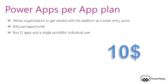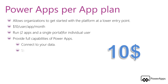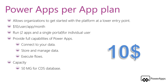The PowerApps Per App Plan provides full capabilities of PowerApps, such as connecting to your data using standard connectors, premium connectors, on-premises data gateway, and custom connectors. You can store and manage data utilizing Common Data Service, create and access custom entities including complex entities, and you will have read-only access to Dynamics 365 restricted entities. It also provides full capabilities for executing flows. For capacity, the Per App Plan gives you 50 MB for Common Data Service database, 400 MB for Common Data Service file storage, and an API request limit of 1,000.